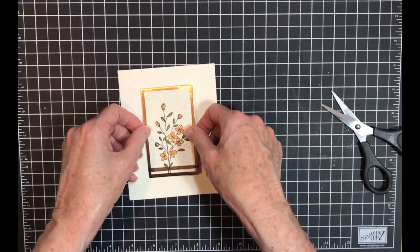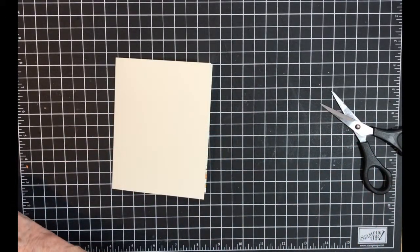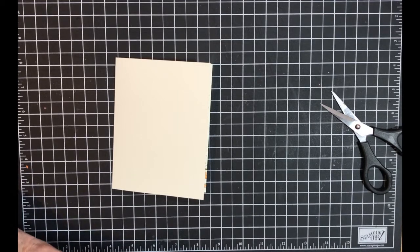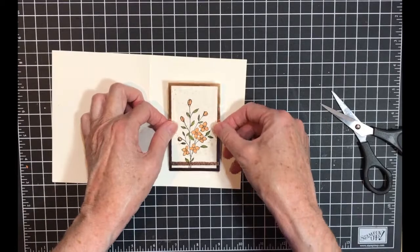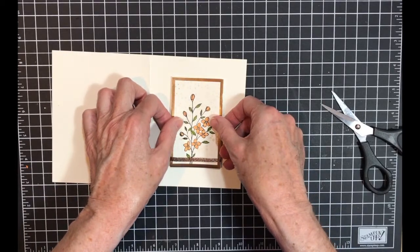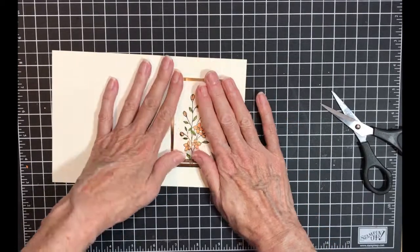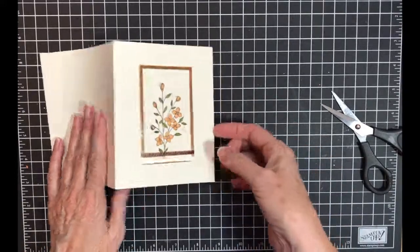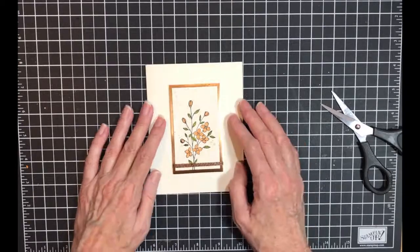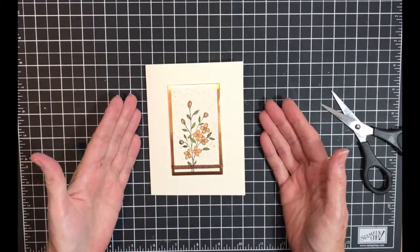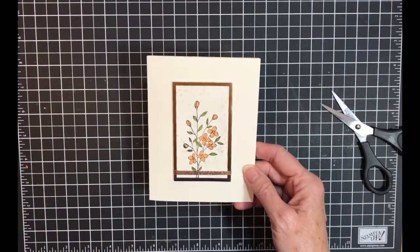And if you wanted to take it further, you could emboss the background, you could stamp the background with something, you could put it on a piece of vanilla and put it on a peach cardstock or Old Olive cardstock. But I wanted a clean and simple card and that's what I got.